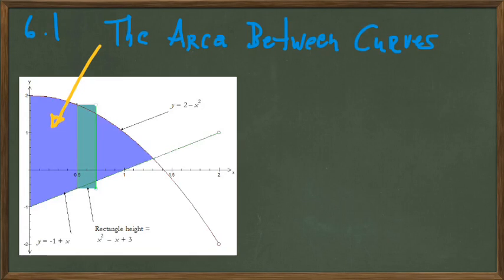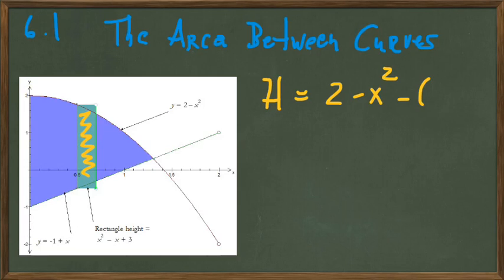So we're trying to find this purple shaded region's area, and we are going to do that by dividing the region up into a number of rectangles whose height is the difference in heights between the two curves. So the height is going to be the top curve, which is 2 minus x squared, minus the bottom curve, which is minus 1 plus x.